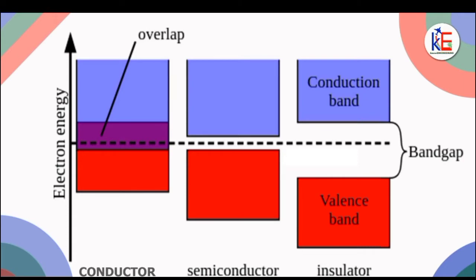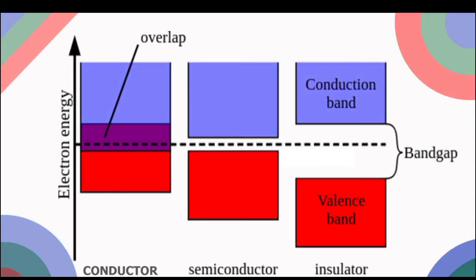And for insulators, the gap between the valence band and the conduction band is very wide, which makes it impossible, or even if possible, we need a very large amount of energy to move the electrons from the valence band to the conduction band.